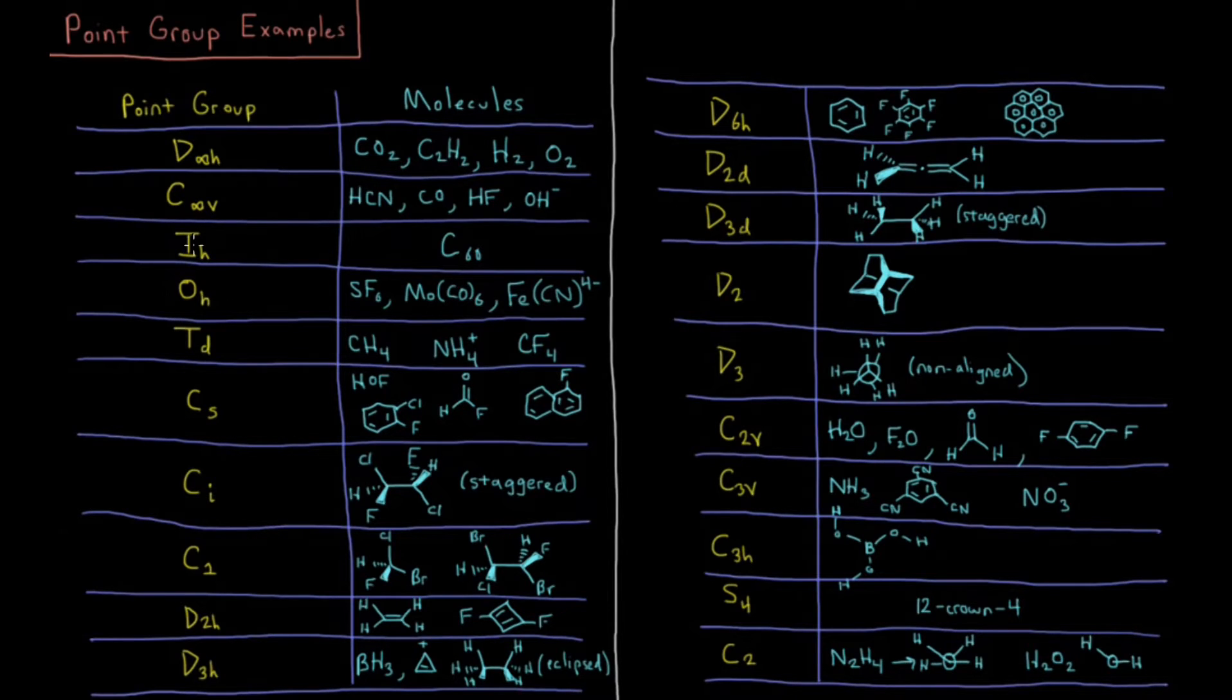The three cubic groups, which are very, very symmetric but nonlinear. Things like Buckminster Fullerene C60 is an icosahedron. We have the octahedral group, things that look like cubes, have the same symmetry as a cube. SF6, molybdenum hexacarbonyl, iron hexacyanide, I need a 6 there, I believe. Yes.